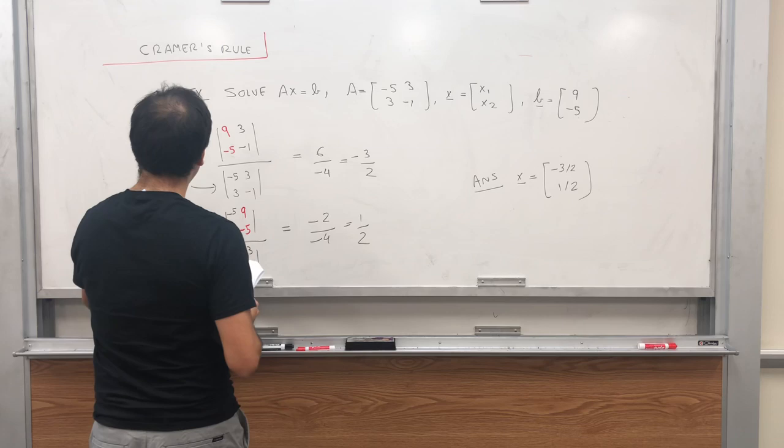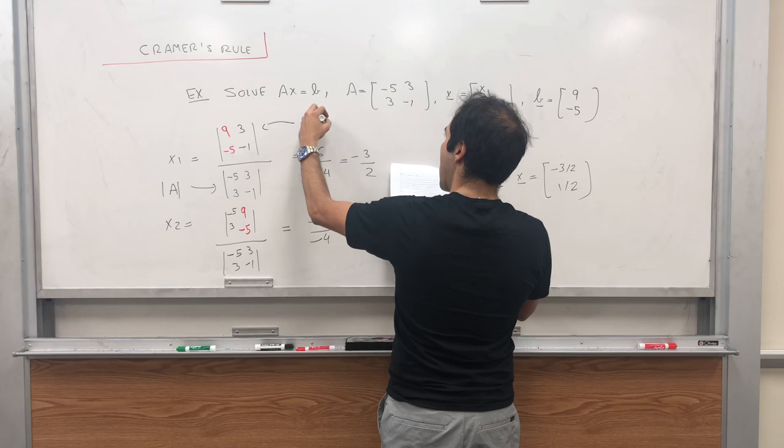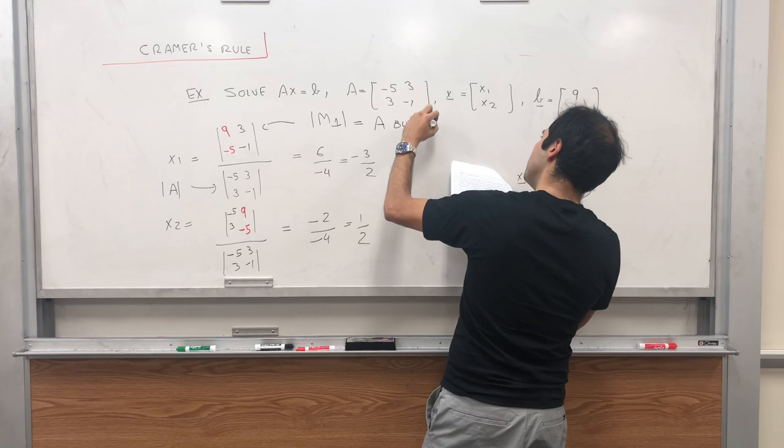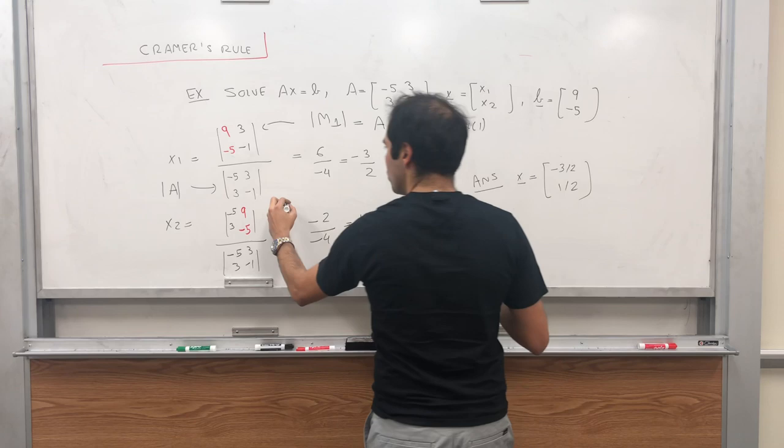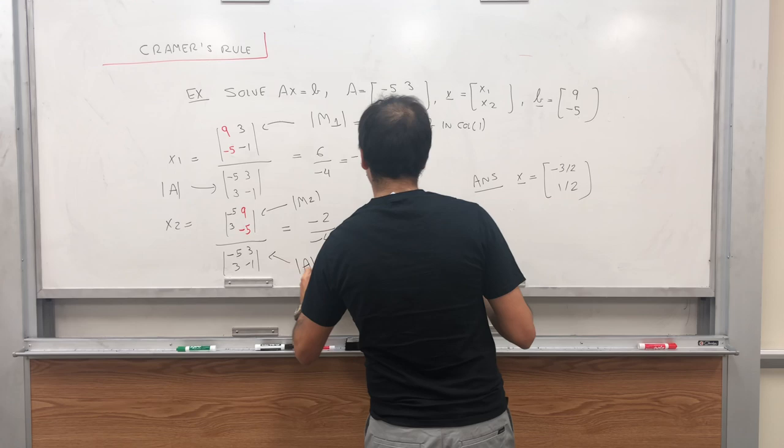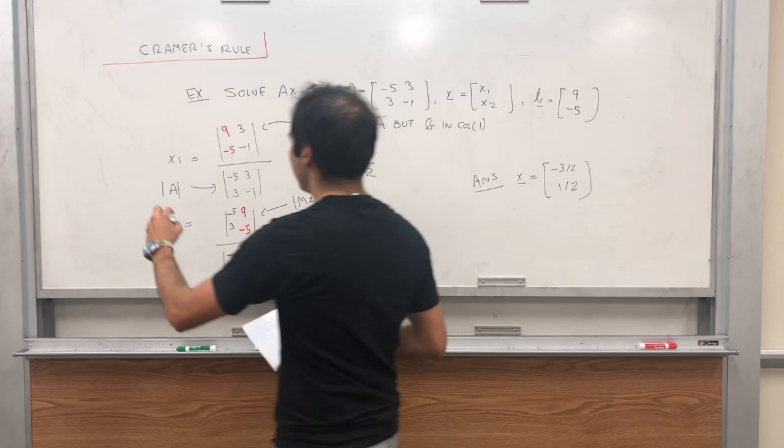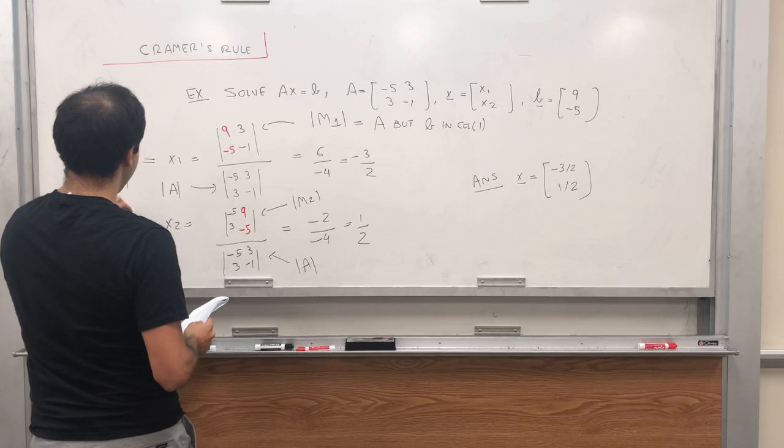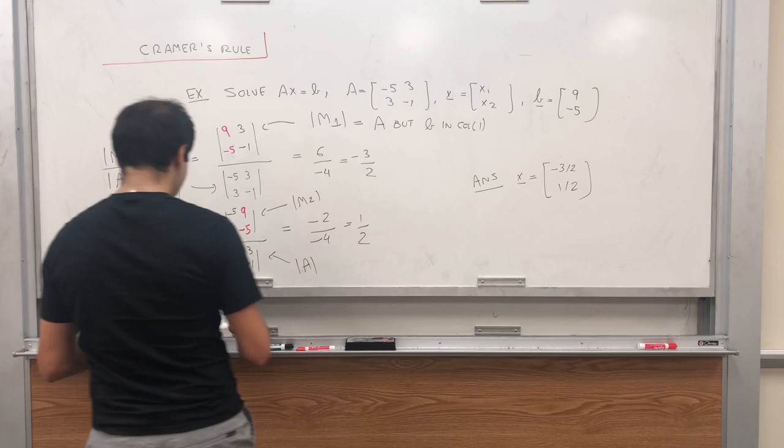And now what I want to show is that this always works. So let's just do a little bit of notation. The denominator is the determinant of A. The numerator we'll write as determinant of M1, which is again A but b in first column, and this will be M2, determinant of M2. So what I really want to show is that x1 is the ratio of M1 and A, and x2 is the ratio of M2 and A.